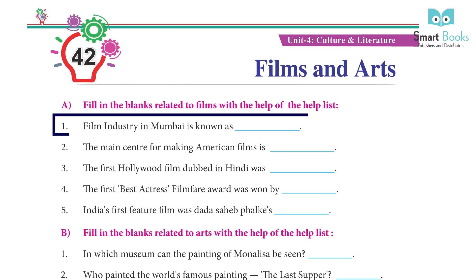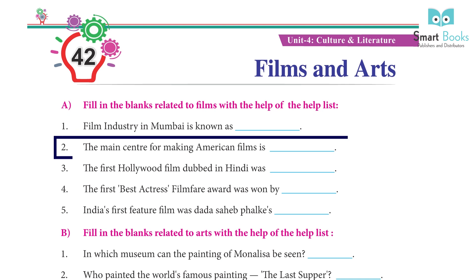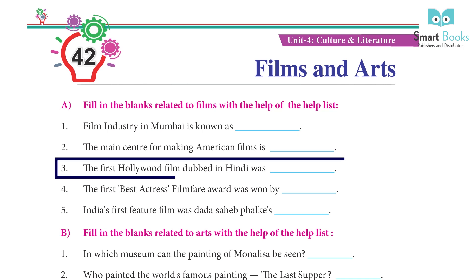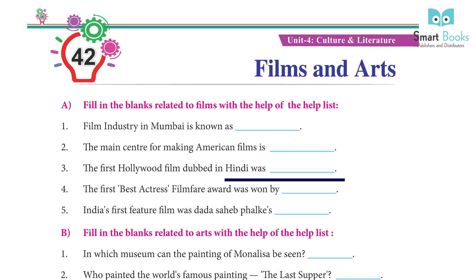1. The film industry in Mumbai is known as Bollywood. 2. The main center for making American films is Hollywood. 3. The first Hollywood film dubbed in Hindi was Jurassic Park.